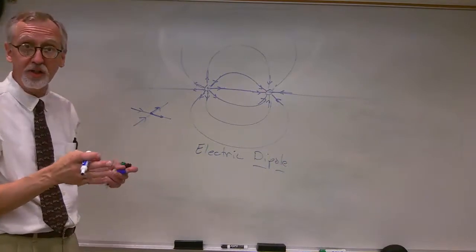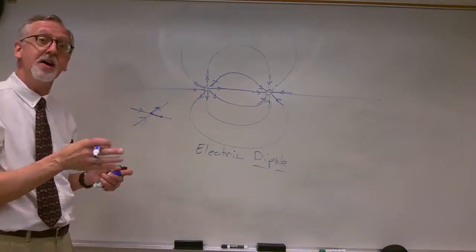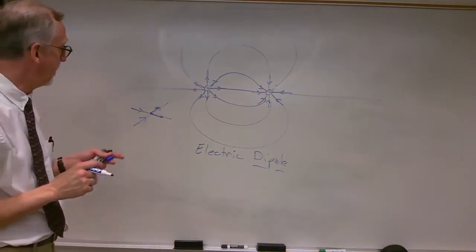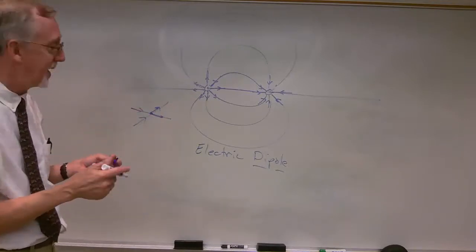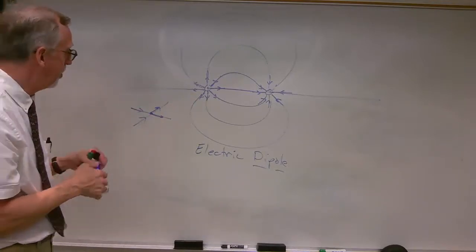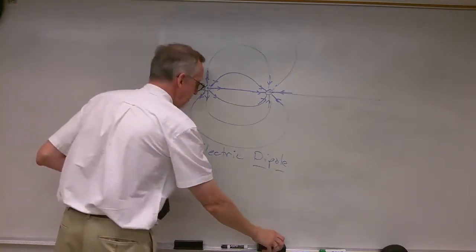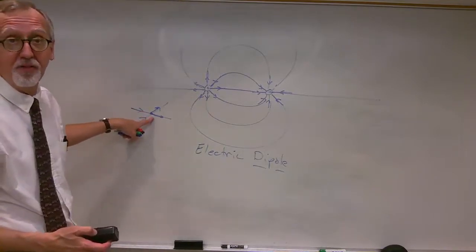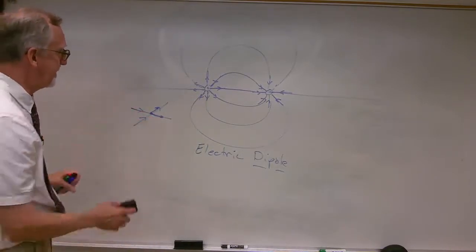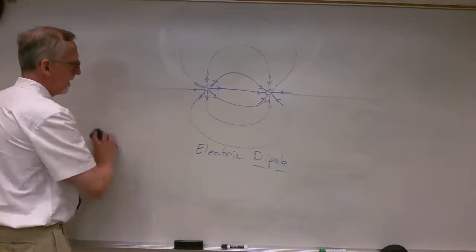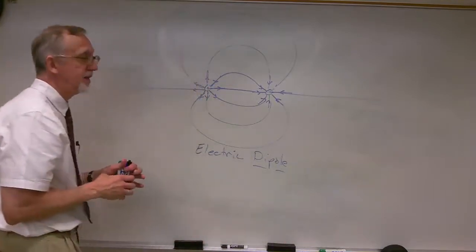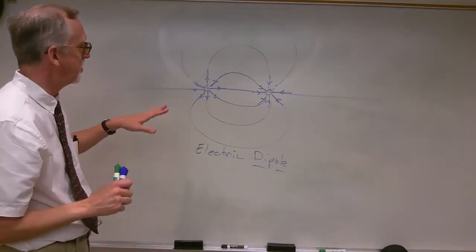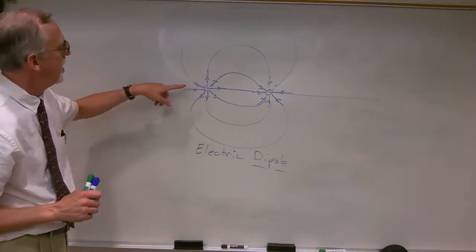What's the net force acting on a test charge placed at that point? The force has to point in just one direction, so the electric field has to point in just one direction. We can't have electric field lines crossing each other — that would indicate two different directions at the same point, which we can't have.